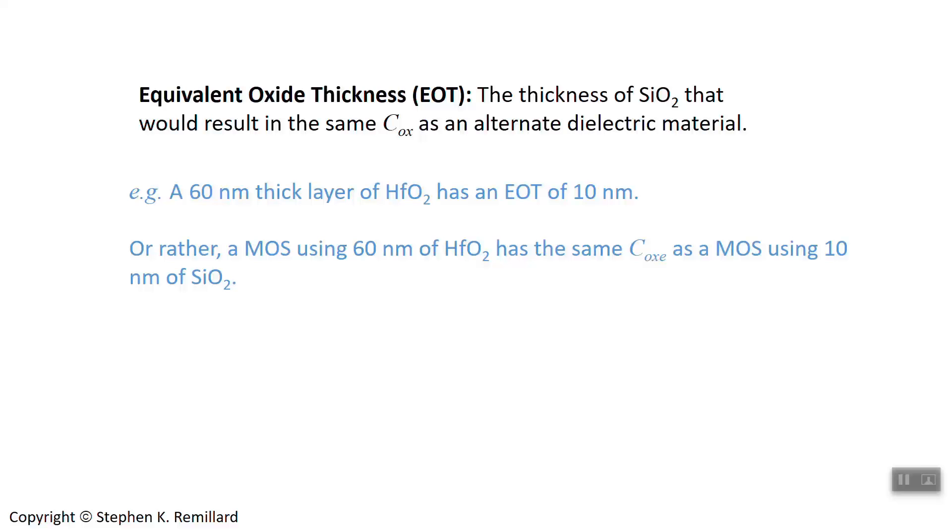If you had a 10 nanometer thick silicon dioxide, you'd have the same capacitance as a 60 nanometer thick layer of hafnia, and that's because the dielectric constant is different by a factor of 6.